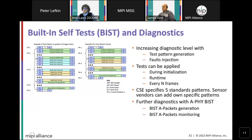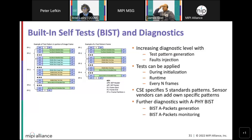Another functional safety feature is built-in self-test and diagnostics, which increases the diagnostic coverage level using test pattern generation and fault injection — allowing the functional safety system to verify it can recognize and detect generated faults. Test patterns can be applied during initialization, runtime, or every N frames. The CSE standard specifies five standard patterns, and sensor vendors can add additional specific patterns. There is also a built-in self-test packet generation and monitoring capability to check each hop element over the AFI network.